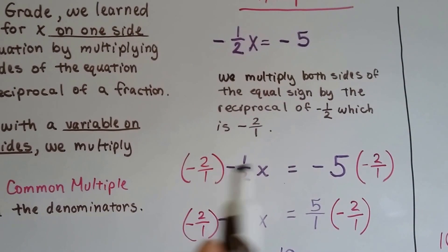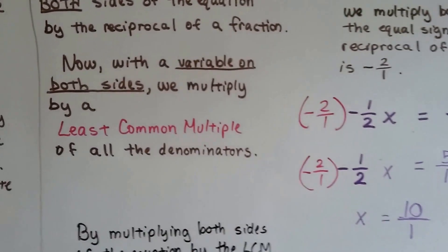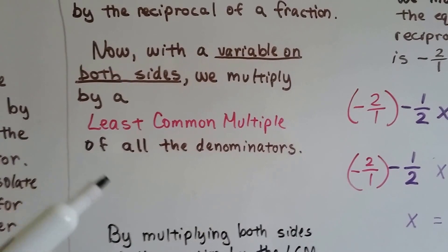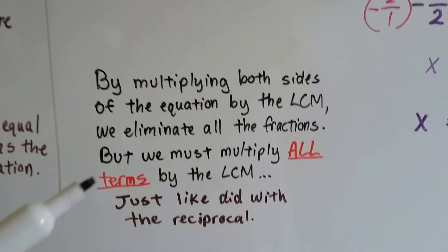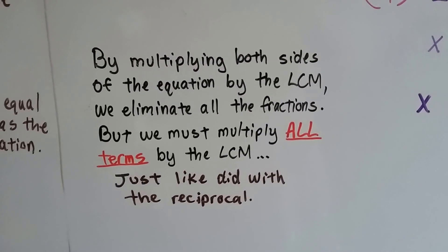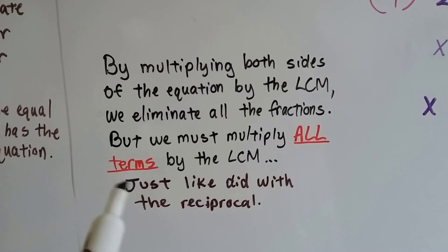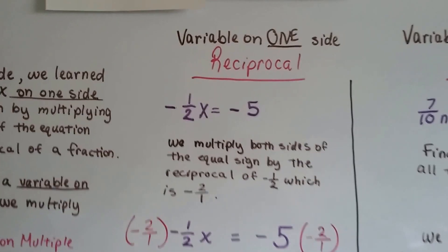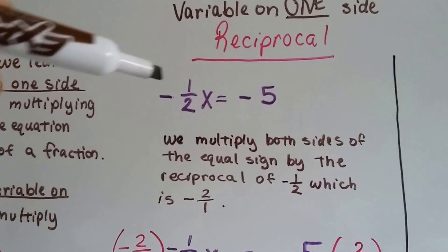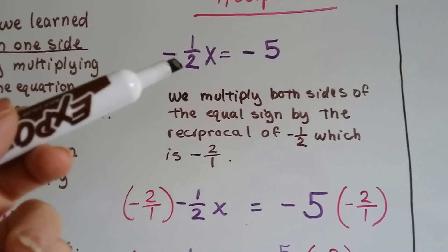Now, with a variable on both sides, we multiply by the least common multiple, and we do it to all of the denominators. By multiplying both sides of the equation by that least common multiple, that LCM, we eliminate all the fractions, but we must multiply all the terms by the LCM, just like we did with the reciprocal. So if you remember from last year, we had a variable on one side, so we just multiplied both sides by the reciprocal.